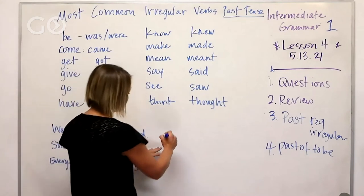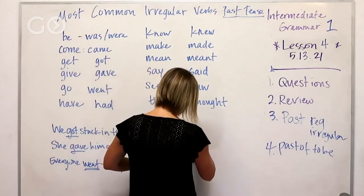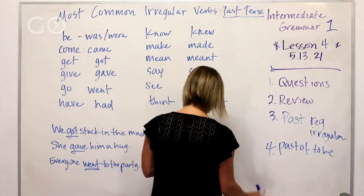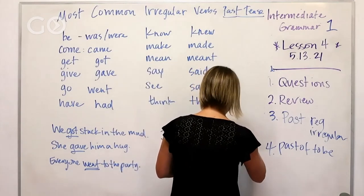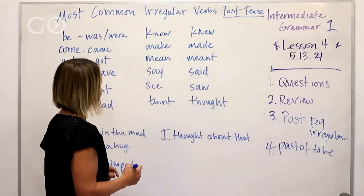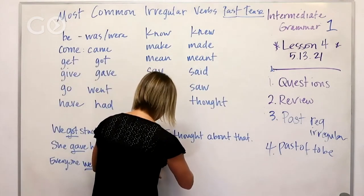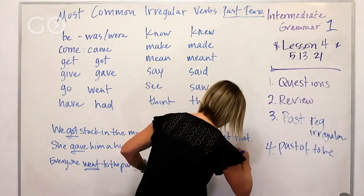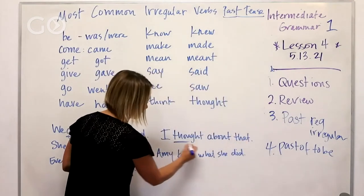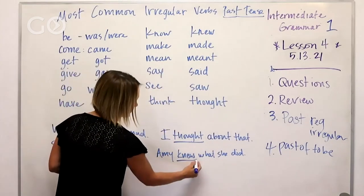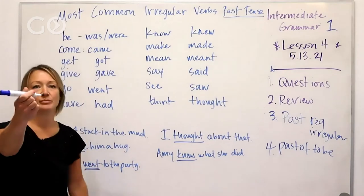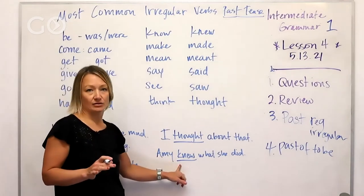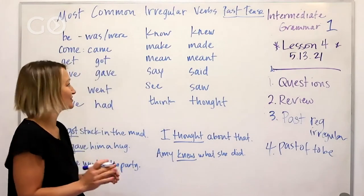How about this — I thought about it. I thought about that. And then: Amy knew what she did. So 'thought' is the past tense for 'think,' and 'knew' is the past tense for 'know.' Just like 'I have a new marker' or 'a new haircut' — it's the same pronunciation. We never pronounce that K. English is just kind of crazy.